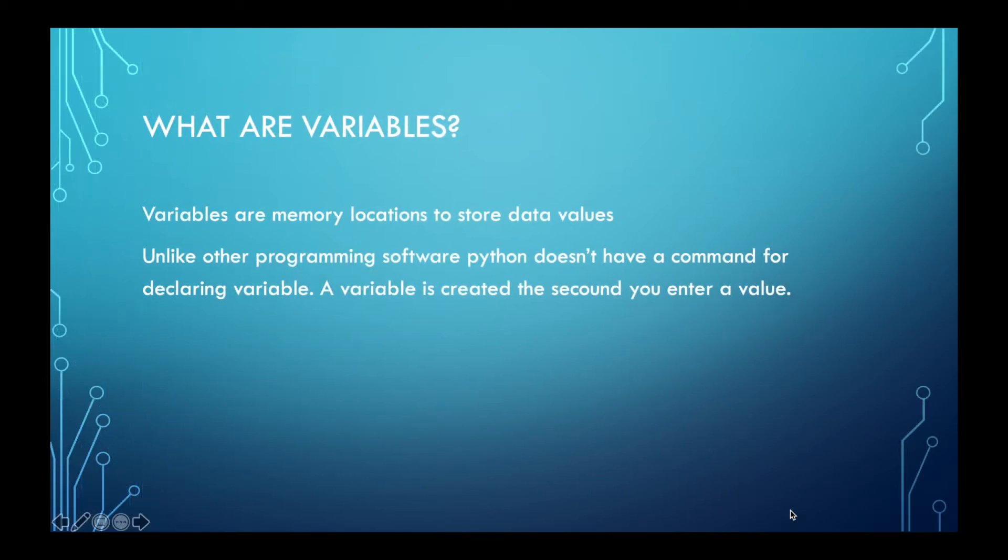Okay so first of all let's just clear out what does variable mean. Variable is a memory location that is used to store data values and the unique thing about Python is that it doesn't have a command for declaring variable. It just creates a variable the second you enter a value in. We'll talk more about this later on in the video.